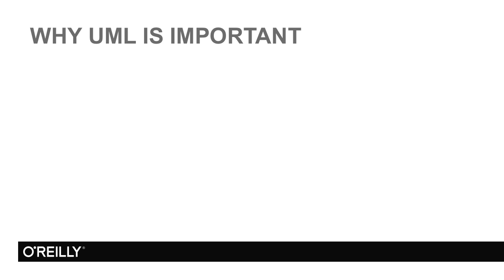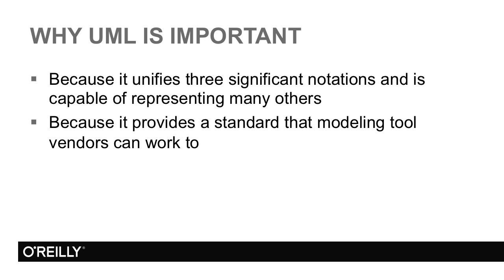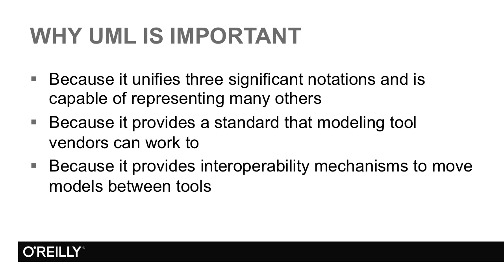Why then is UML important? The obvious reason is that it unified the three notations of the authors of the original standard, and that it could represent the concepts in others. In fact, UML has become the de facto standard for modelling software systems. There are other standards out there in related areas, such as SysML for systems engineering, but they tend to be related to UML. It also provides mechanisms for models to be serialised into a file format that allows them to be moved between compliant modelling tools, meaning companies can work with partners or suppliers that use different tools.